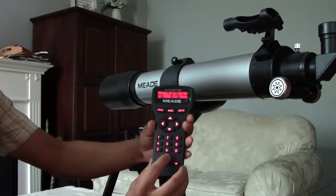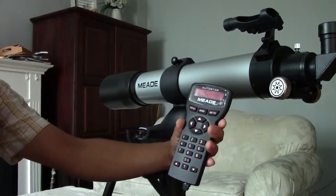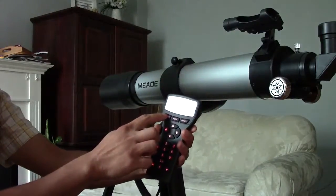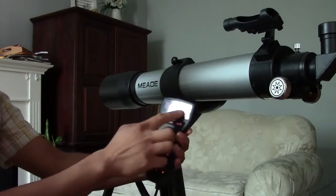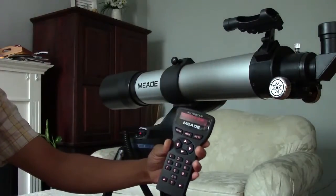It says press zero to align, so I'm going to align it. Press zero. I'm just going to hit enter here. It's just instructing me to make sure it's level and that it's pointed north. Hit enter.